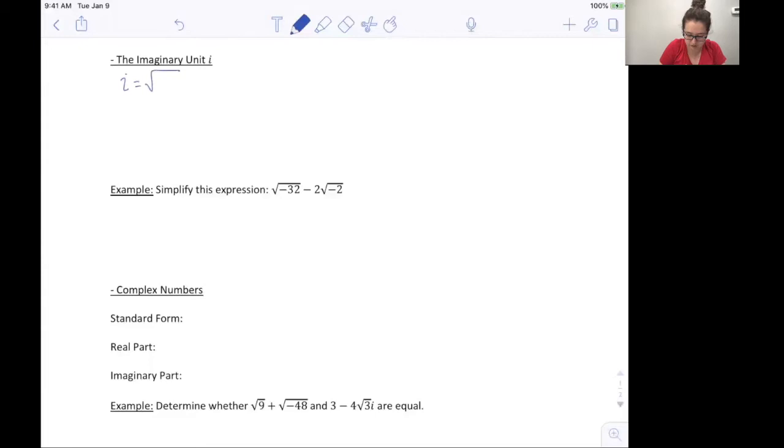So before i is introduced, x squared cannot equal negative one. There's no real solution for that. But with i, if you square a square root, you just get what's inside. So i squared can equal negative one. So your solution to x squared equals negative one would be i.